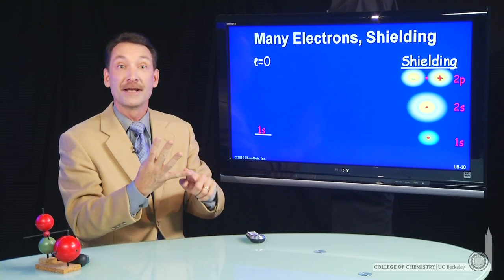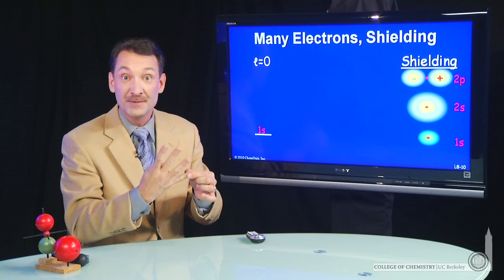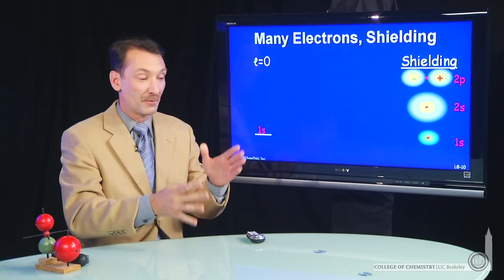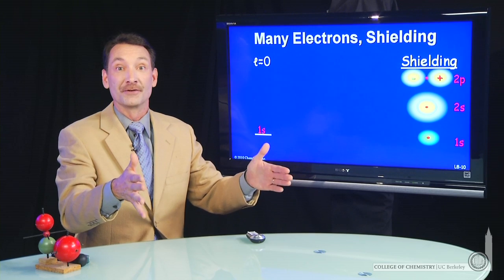n, l, m sub l, and m sub s. At least one must be different for each electron. And we've seen they always go in spin parallel to degenerate orbitals.